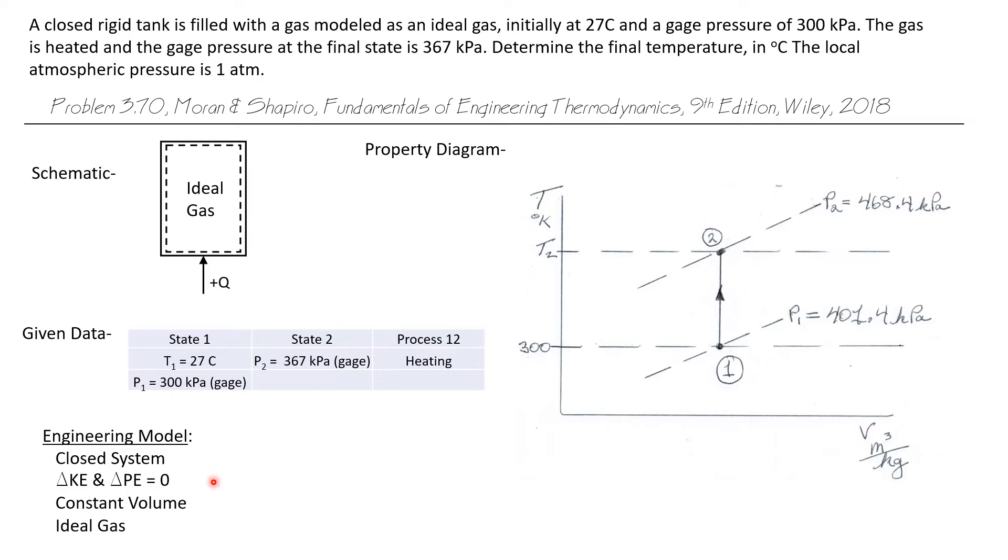We'll model this as a closed system, and we'll ignore any insignificant changes in kinetic potential energy. It's a constant volume process involving an ideal gas, and we want to find the final temperature in degrees C.